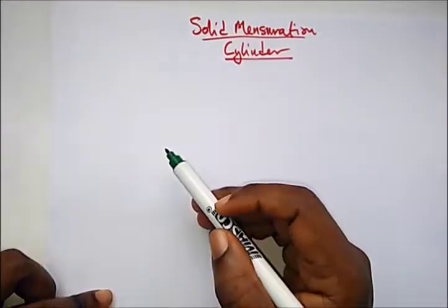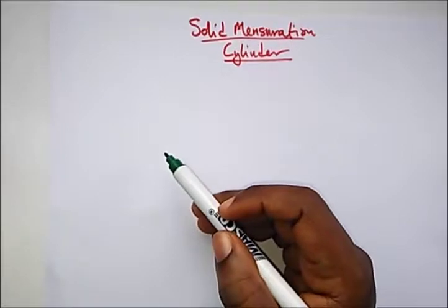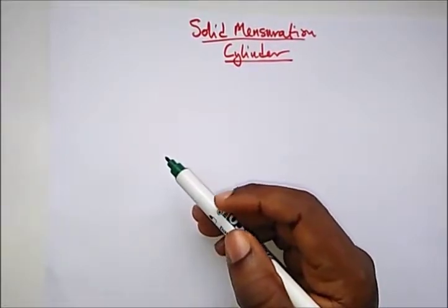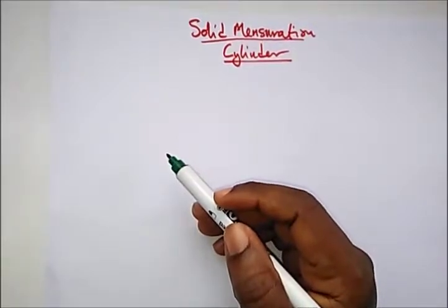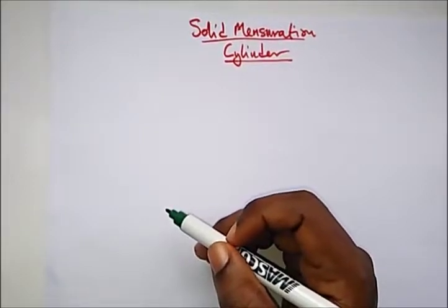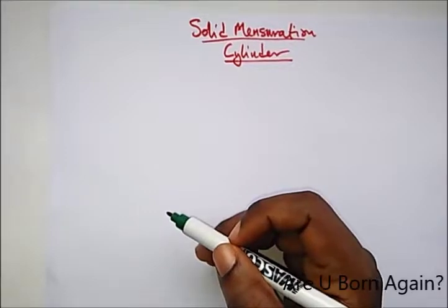Hello, welcome to Destined to Win Tutorials. Today we're going to be taking a topic under solid mensuration. We started solid mensuration where the first one I treated was cube, and now we're going to be treating the cylinder. We're going to know the formulas and have some past questions from WAEC and GCE.